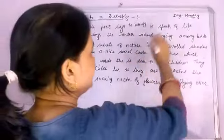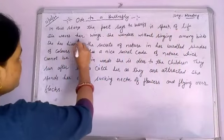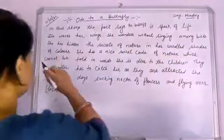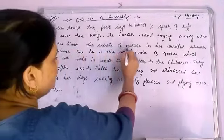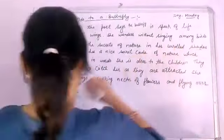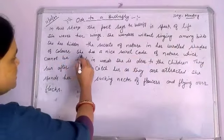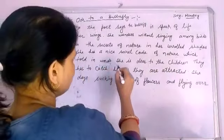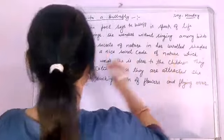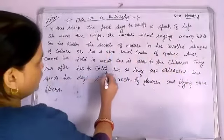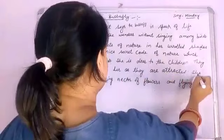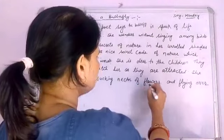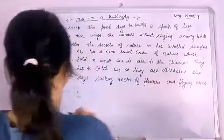In this stanza, the poet says the butterfly is part of life. She waves her wings. She wonders without singing among birds. She has hidden the secrets of nature in her unrolled shades of colors. She has a nice, great code of nature which cannot be told in words. She is dear to the children — they run after her to catch her. As they are attracted, she spends her days sucking nectar from flowers and flying over flocks.